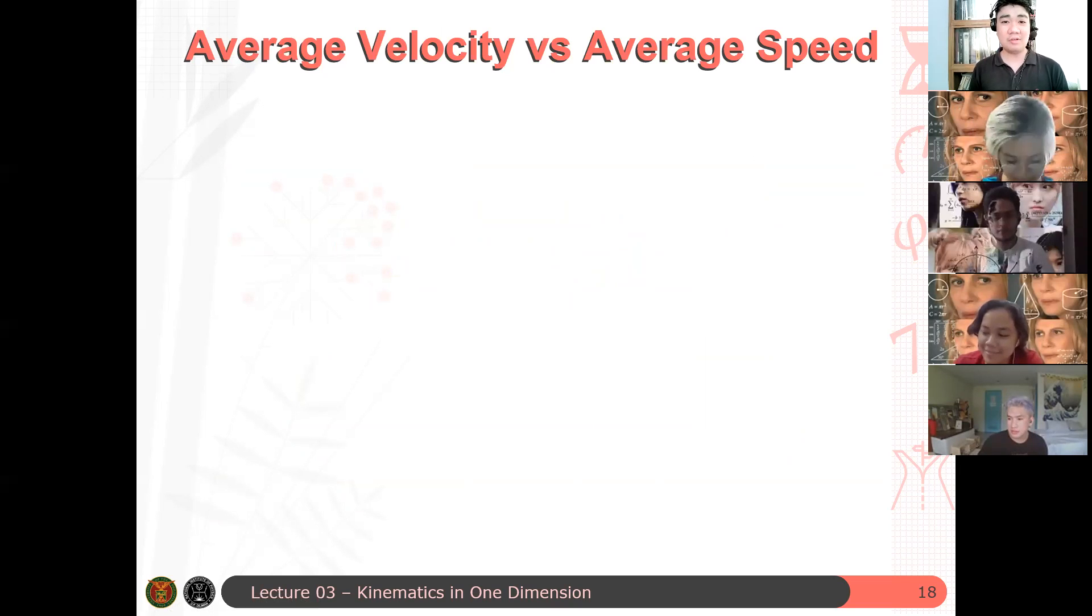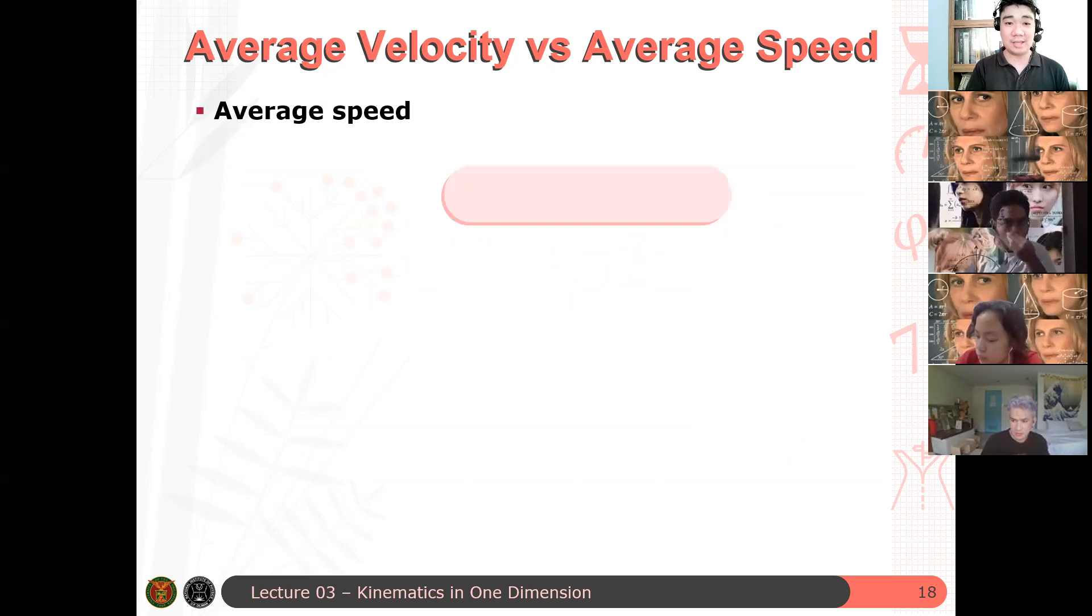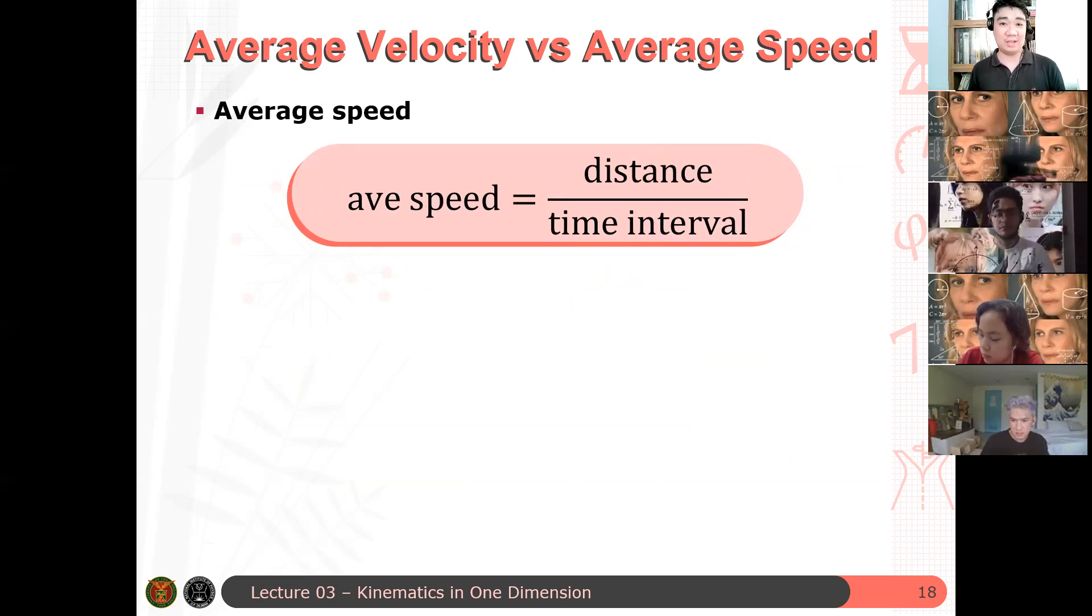Now, there's also this thing called average speed. So average speed is different from average velocity in the same way that distance is different from displacement. So average speed is just distance over time interval. So we will not define our speed to be V. Some books do that. But because what's important for us is the velocity of a particle, not the speed of the particle in this context, we will define our average speed as just ave speed. Because you might be used to other teachers using V for speed. But sometimes it's confusing. Okay? Questions?